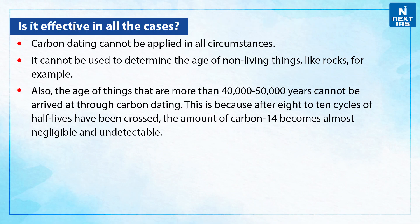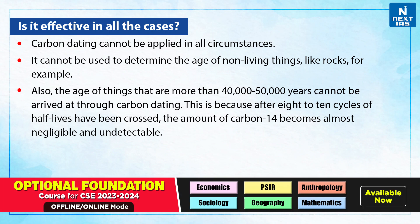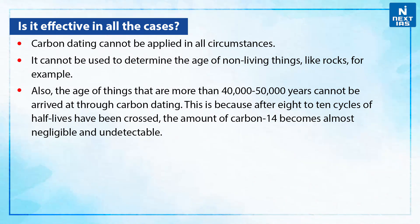Is carbon dating effective in all cases? Carbon dating cannot be applied in all circumstances. It cannot be used to determine the age of non-living things like rocks. Also, the age of things that are more than 40,000 to 50,000 years cannot be arrived at through carbon dating. This is because after 8 to 10 cycles of half-lives have been crossed, the amount of C-14 becomes almost negligible and undetectable.